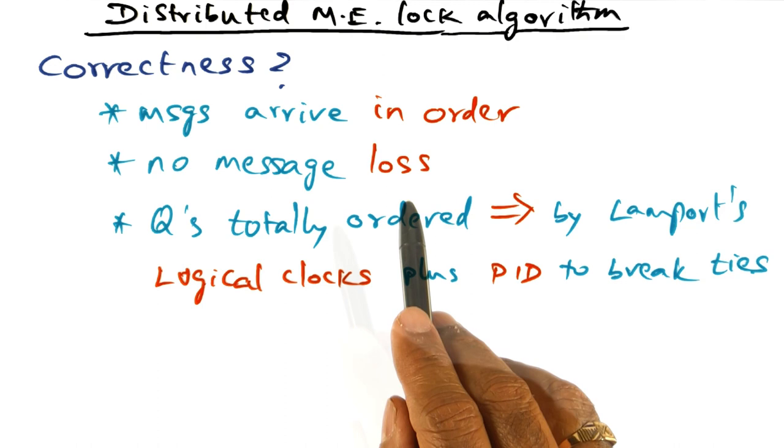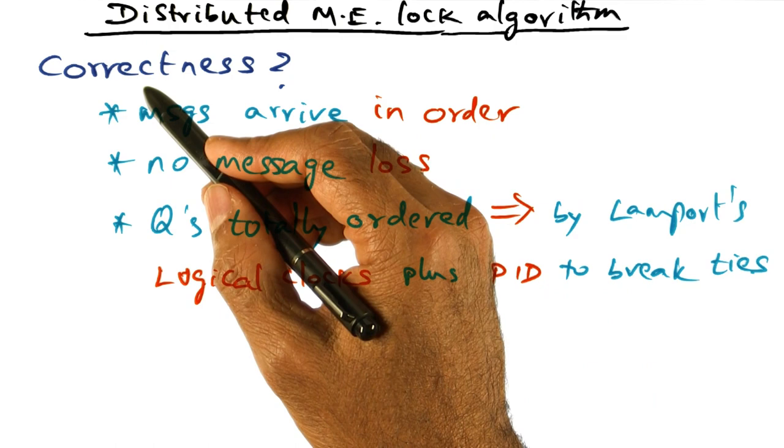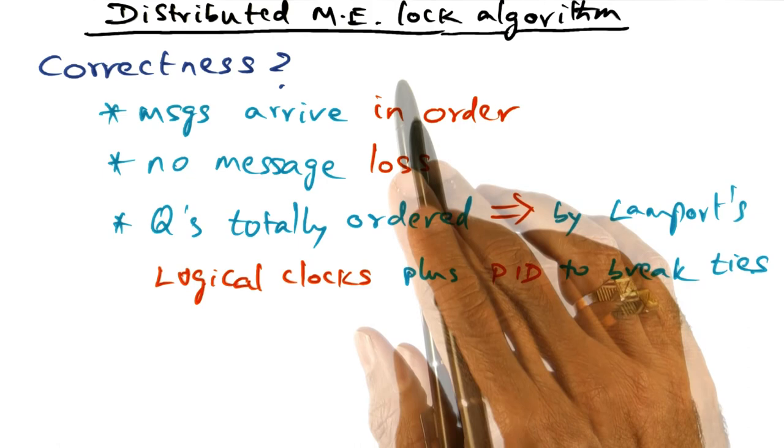The second assumption is that there is no loss of messages. So every message that is sent is definitely received in order. So these are two fundamental assumptions that are responsible for this algorithm being correct. Now that we've seen Lamport's mutual exclusion lock algorithm, time for another quiz.